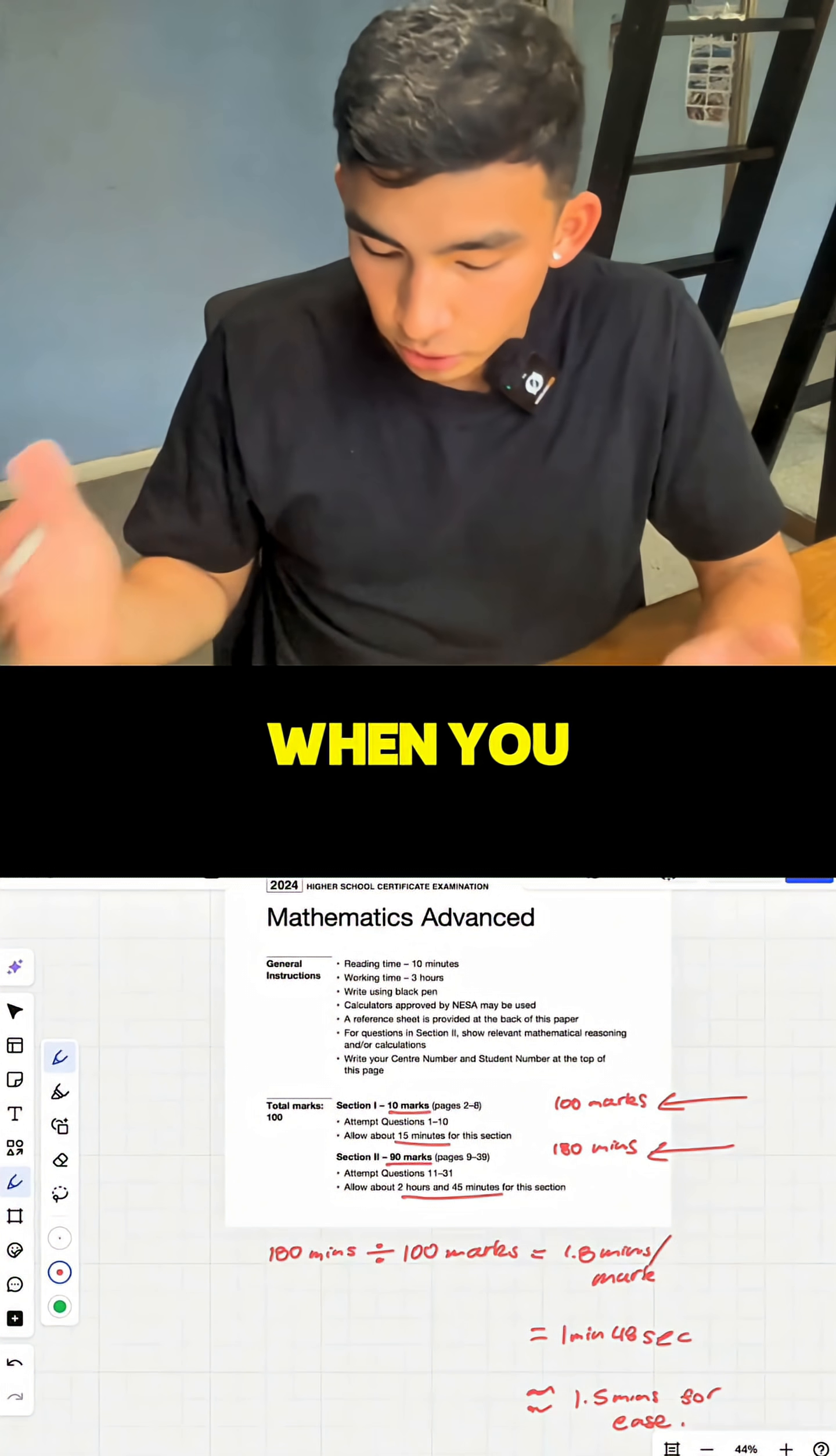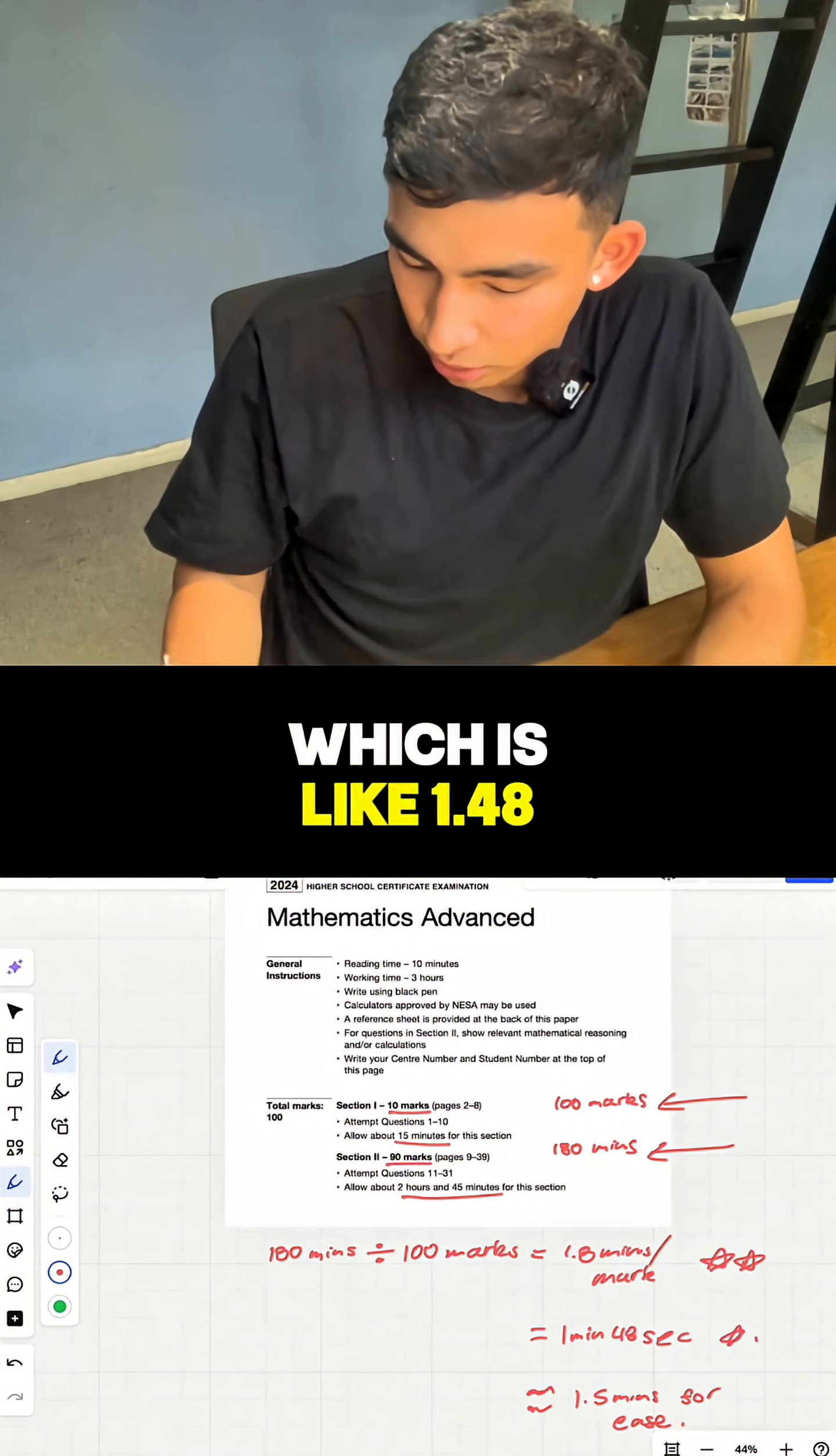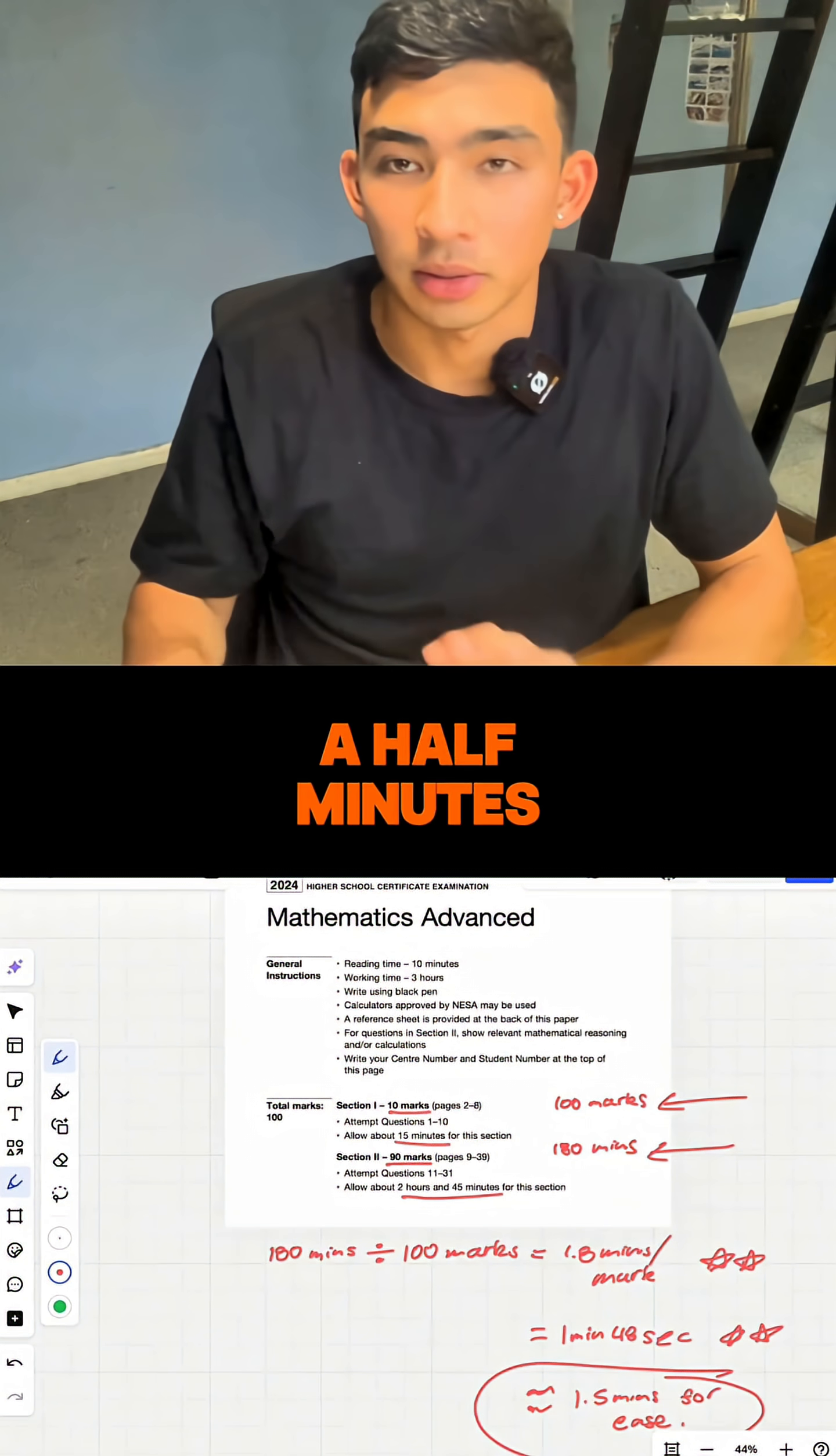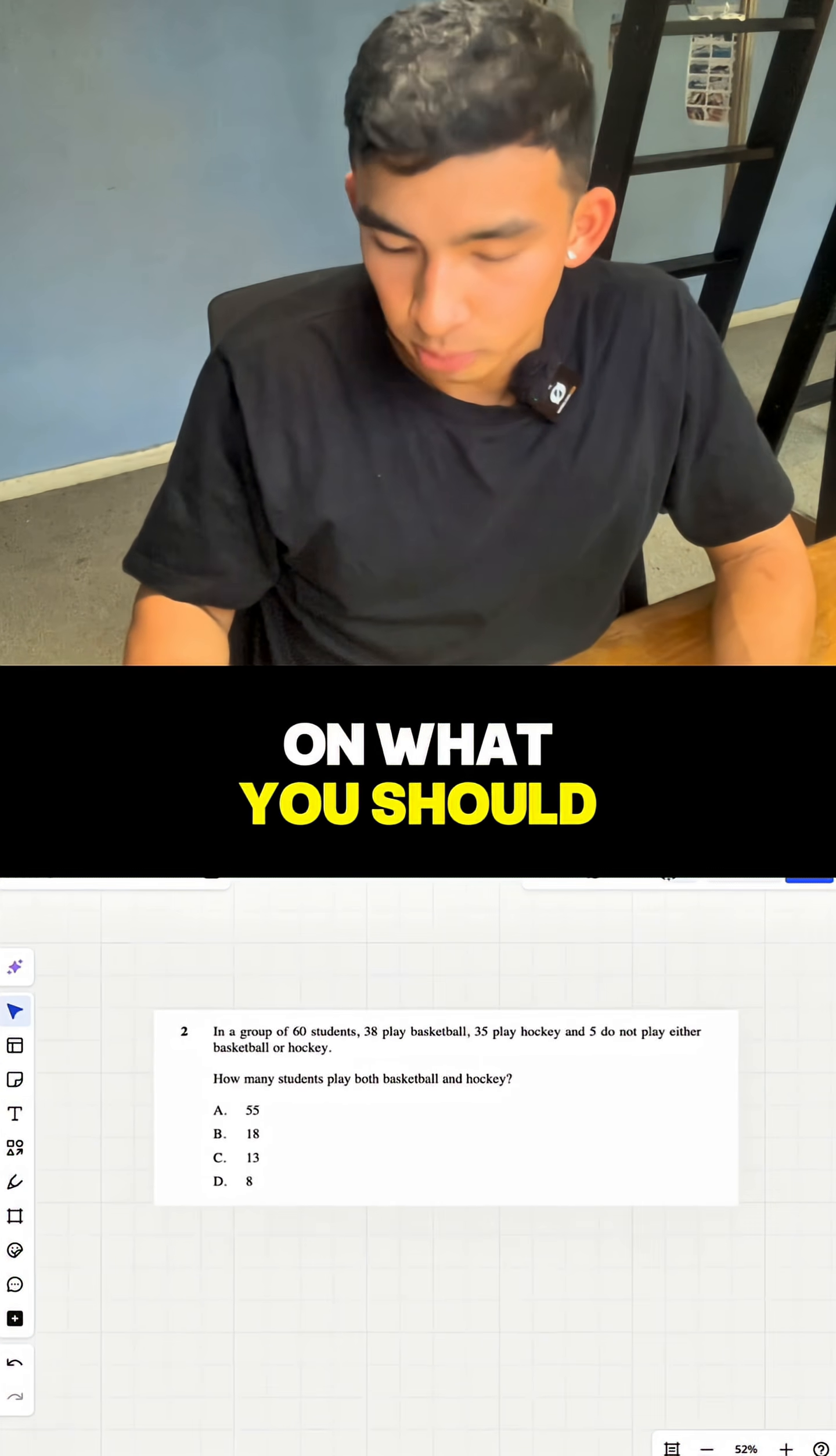When you actually do that, let's divide it. We'll do minutes divided by marks. So that means we're going to get around 1.8 minutes per mark, which is like one minute 48 seconds. I'm just going to put it as one and a half minutes per mark because it's probably better that you do it faster anyway. Then you can actually have a benchmark on what you should be doing and how fast you should be getting stuff done.